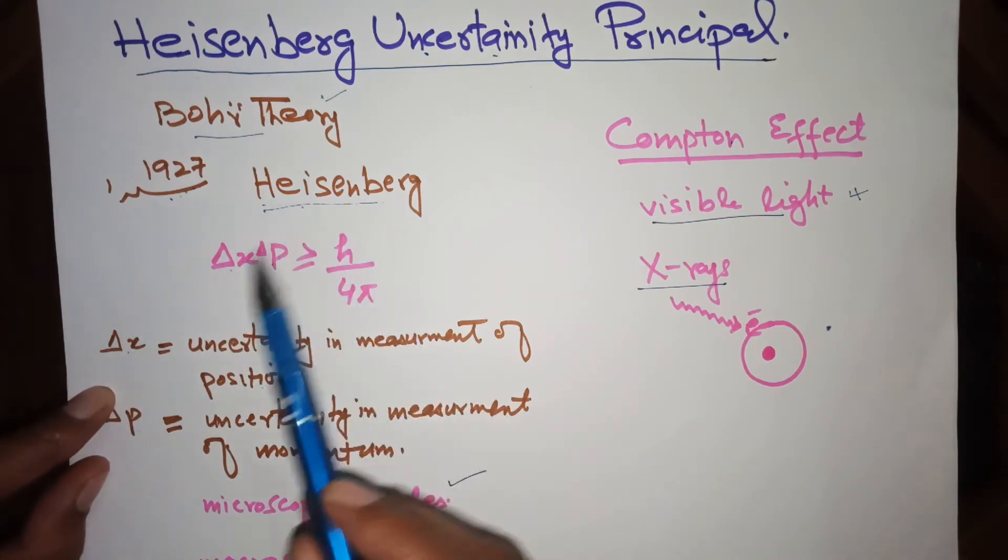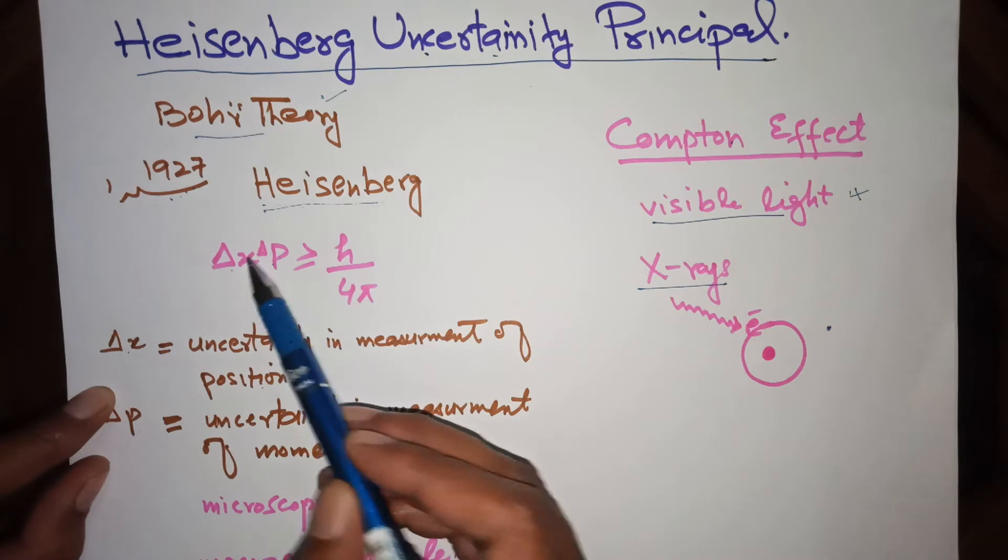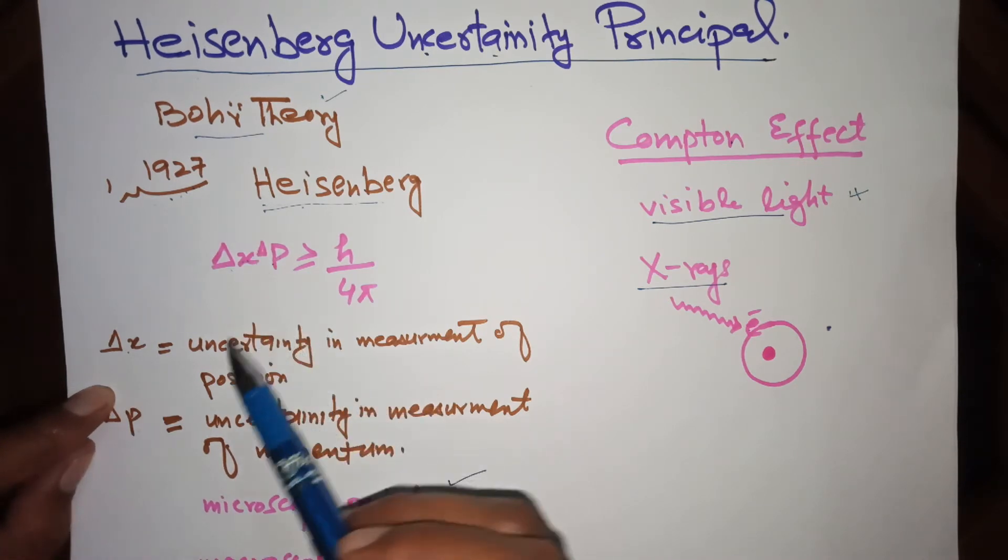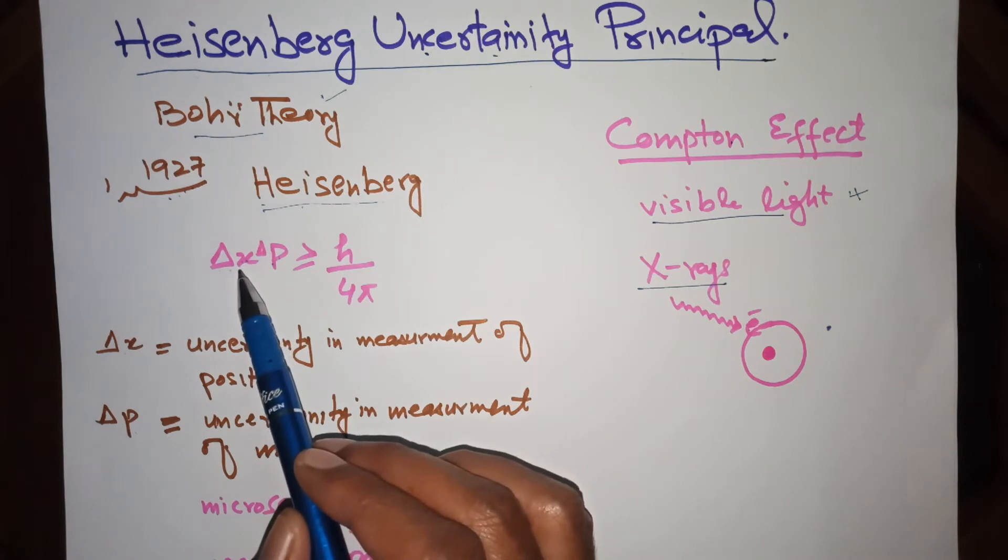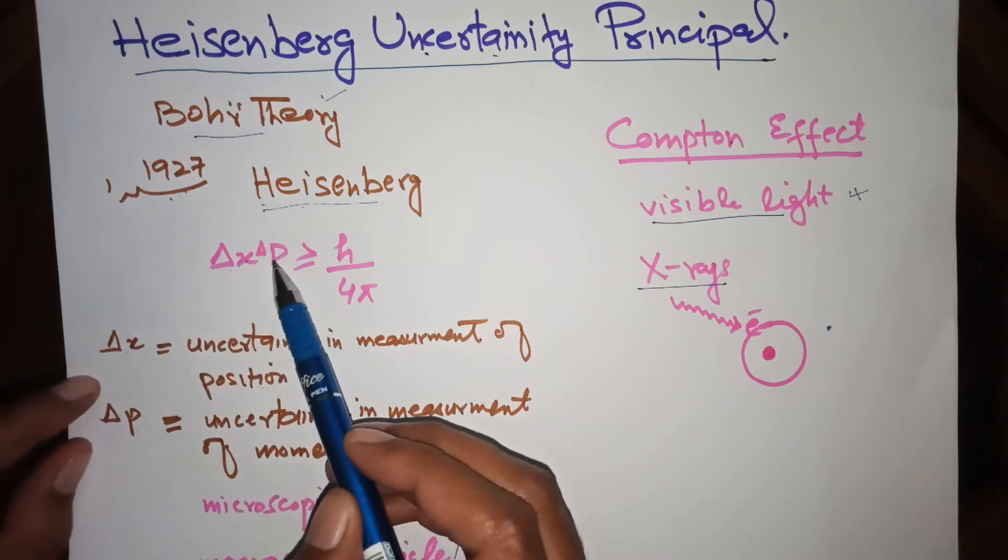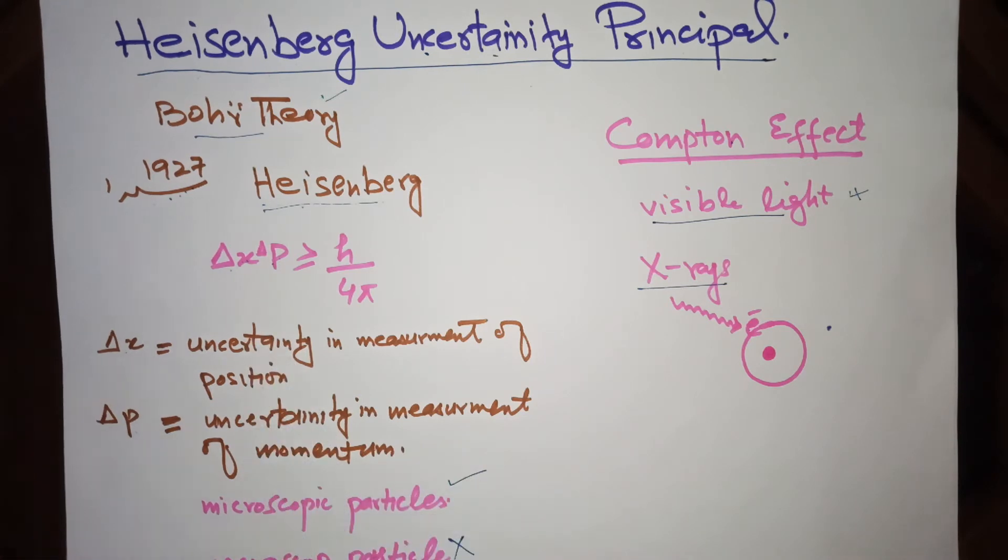According to this principle, if Δx is small, then Δp will be large. It means that if we find the position of electron accurately, then its momentum will be less accurate.